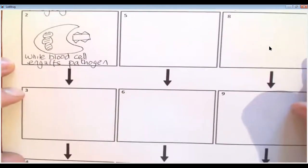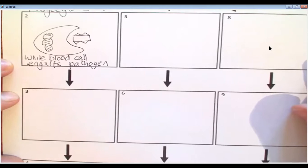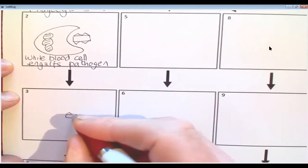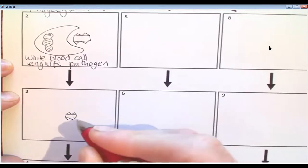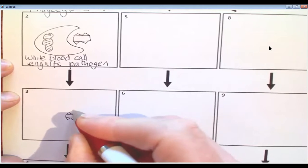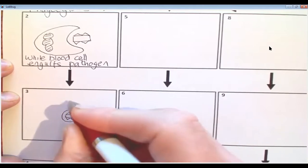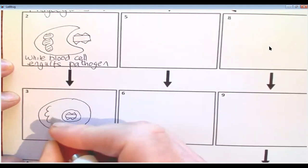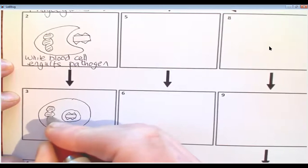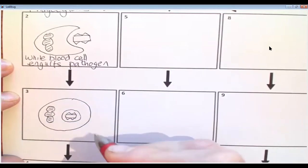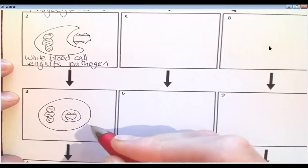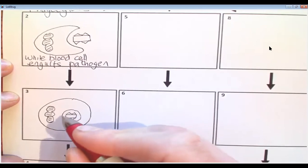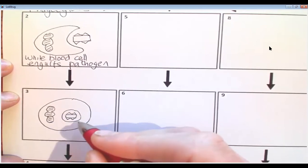I'm going to move down to box three now. Now the next thing which happens is this. So if you just watch carefully, I made it a little bit smaller. The pathogen doesn't really get smaller. I'm going to do this. So what's happened is the pathogen has been taken inside of the white blood cell. And we call these structures vesicles. Not really necessarily at GCSE, but they do have a name. So they're taken inside.